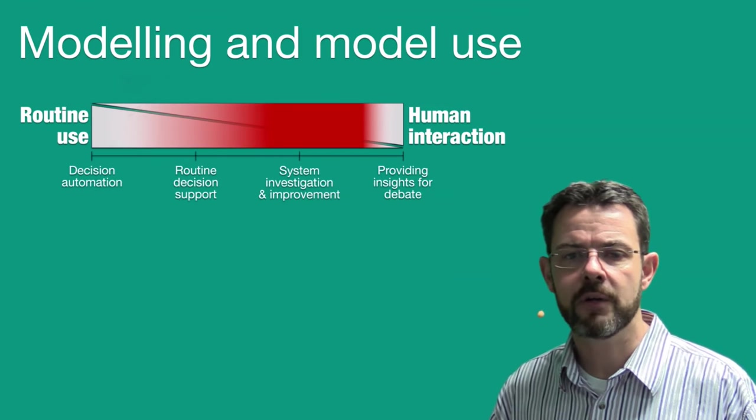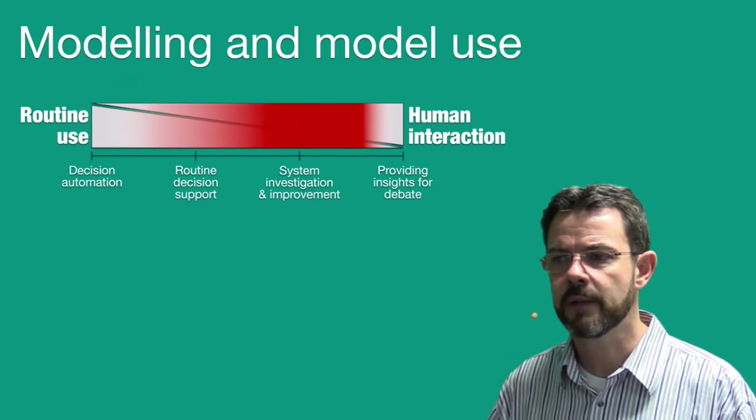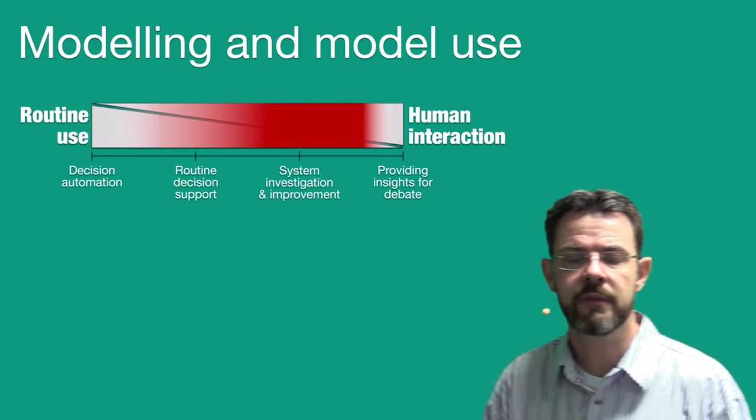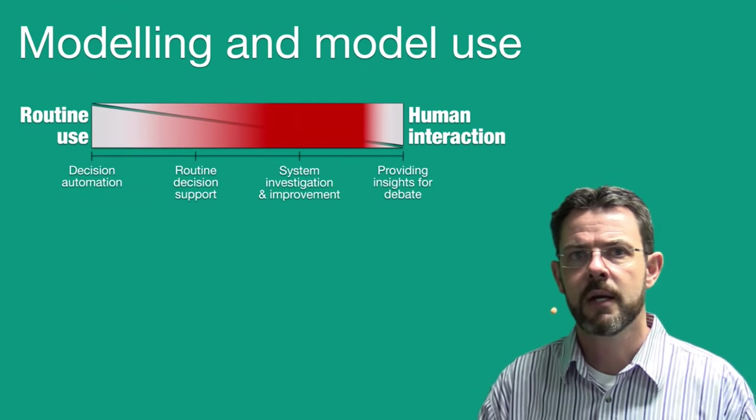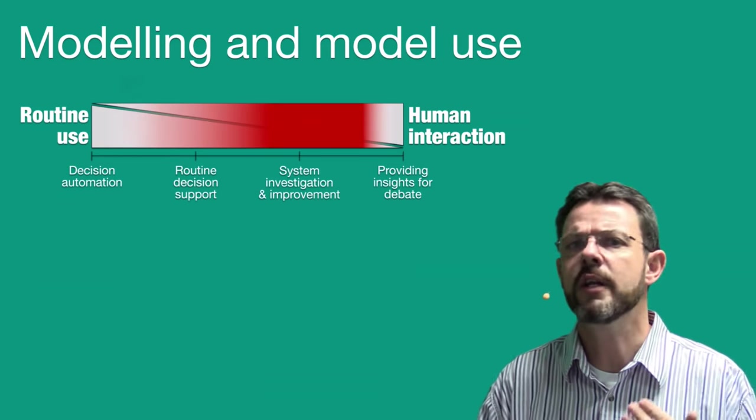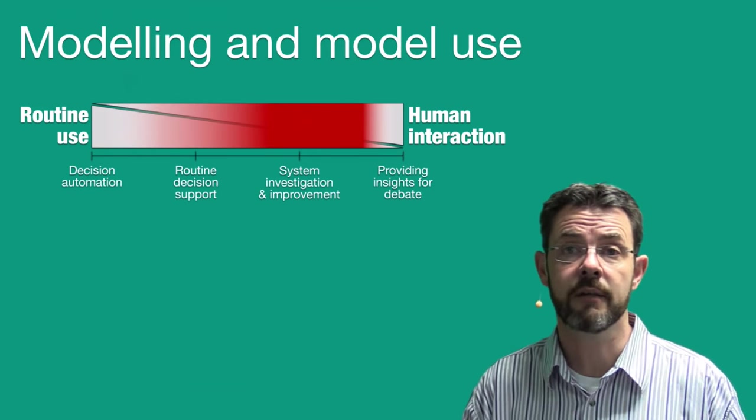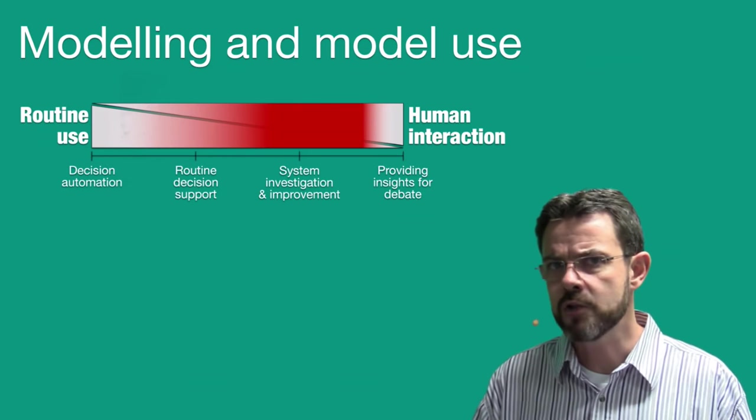And in our group, we typically focus on system investigation and improvement. So we're kind of here on the upper extremes, the upper echelons of this model. Because we usually don't get involved in routine decision-making, definitely not in decision automation.